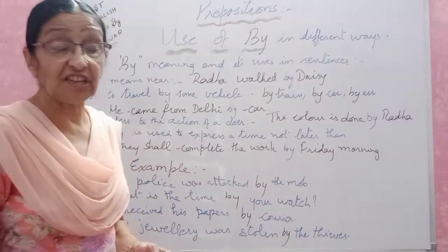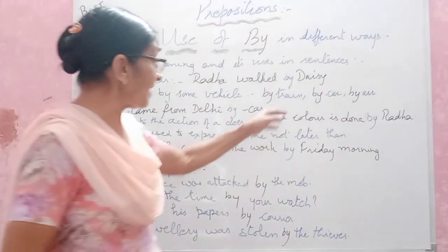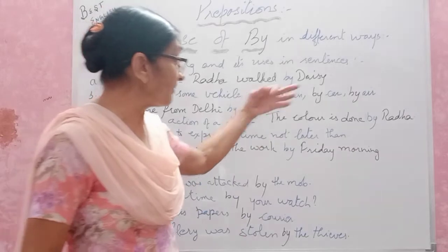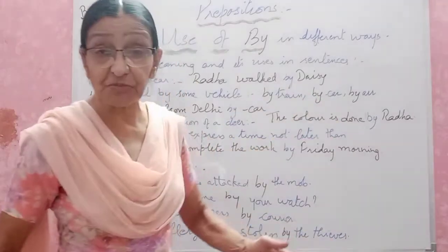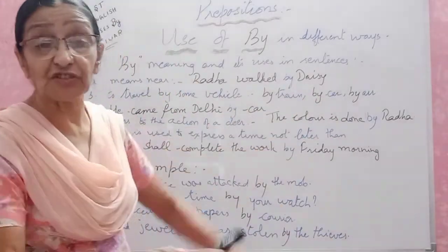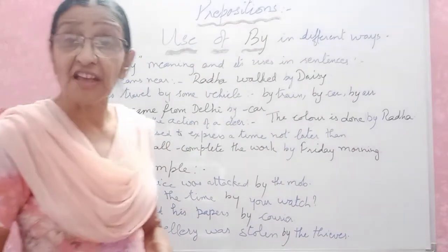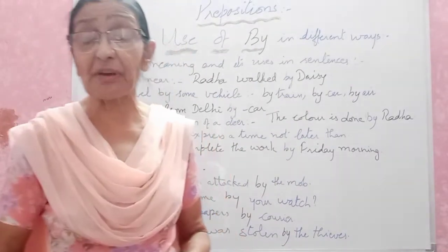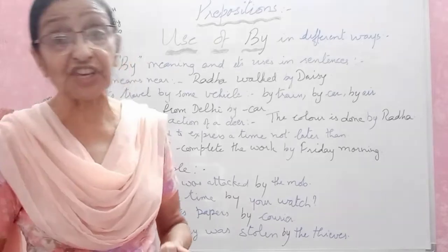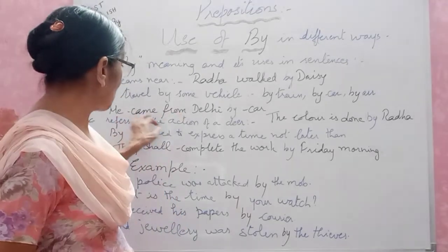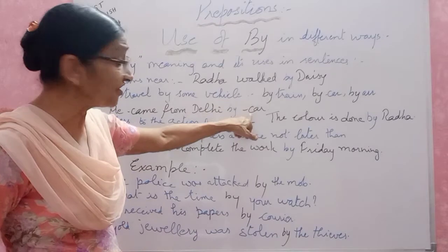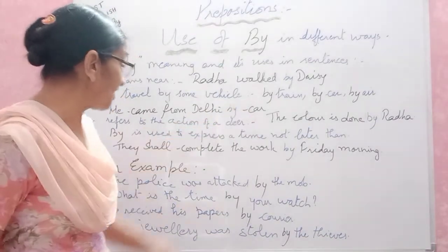Now he is coming from Delhi. How did he come? He came by car. He could come by train or by air, but in this sentence it is by car — meaning he has his own car and he came over here driving his car, traveling in his car. So 'he came from Delhi by car' — the car is the vehicle, so we use 'by' there.